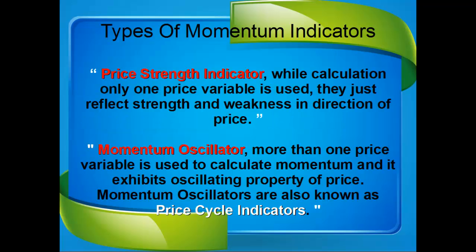Thus there are two types of Momentum Indicators. The first is the Price Strength Indicator, in which only one price variable is used during calculation. They just reflect strength and weakness in the direction of price. The second is the Momentum Oscillator, in which more than one price variable is used to calculate momentum, and it exhibits the oscillating property of price. Due to its ability of mapping price cycles, Momentum Oscillators are also known as price cycle indicators. In spite of the fact that both price strength indicators and momentum oscillators measure momentum, they represent momentum in different ways.